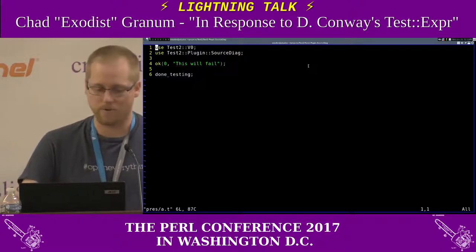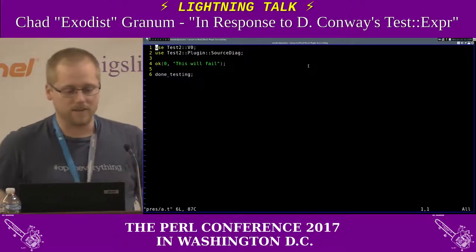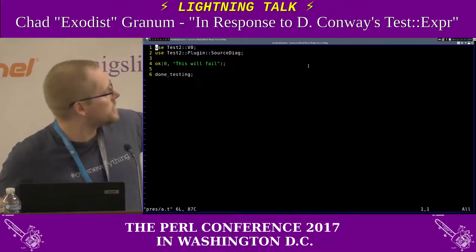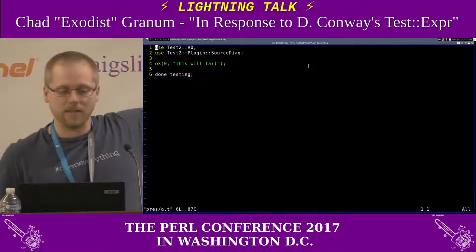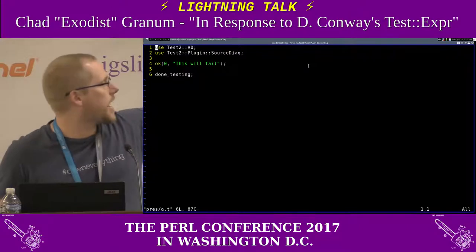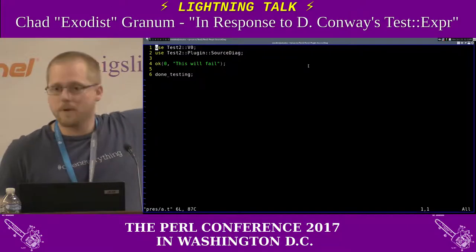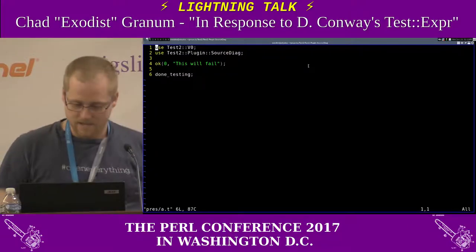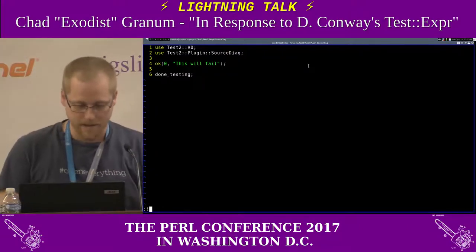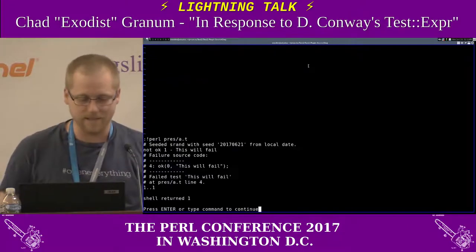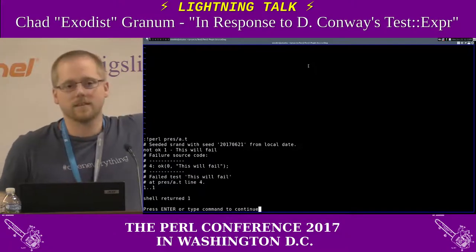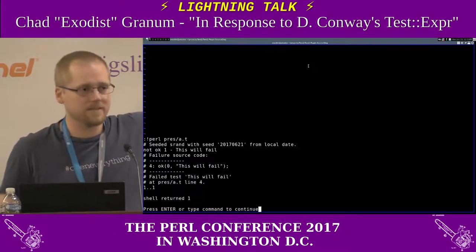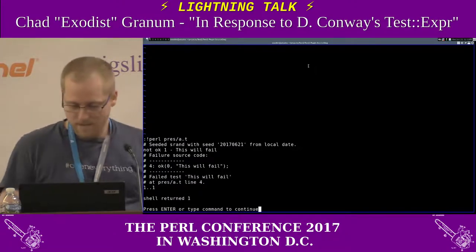It just works when you import it. So for instance, we've got this test — this is Test2 — and then we load SourceDiag. Then we put a failing test. Let's see what happens when we run this. Look at that: line 4, there's the code that failed. You get it.